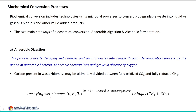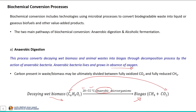Let us begin with anaerobic digestion. In the anaerobic digestion process, it converts decaying wet biomass and animal waste into biogas through decomposition by the action of anaerobic bacteria. These anaerobic bacteria live and grow in the absence of oxygen, and this process is carried out at a temperature range of around 20 to 55 degrees Celsius. Carbon present in the biobased feedstock or animal waste may ultimately be divided between fully oxidized carbon dioxide and fully reduced methane.